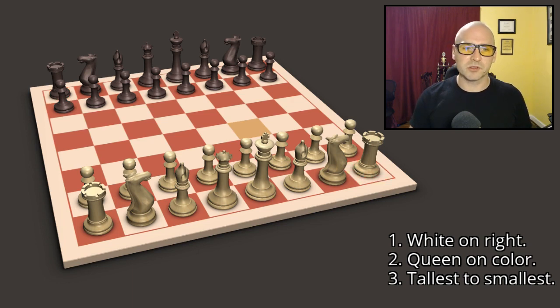Then we want to make sure that we have our queen on her color. The light colored queen should go on a light square. The dark colored queen should go on a dark square.